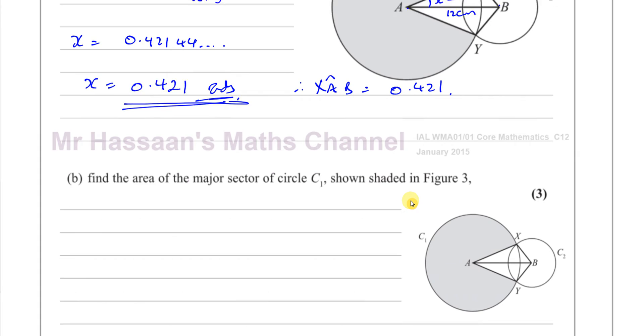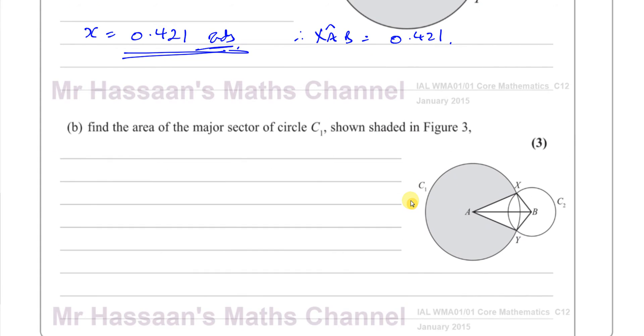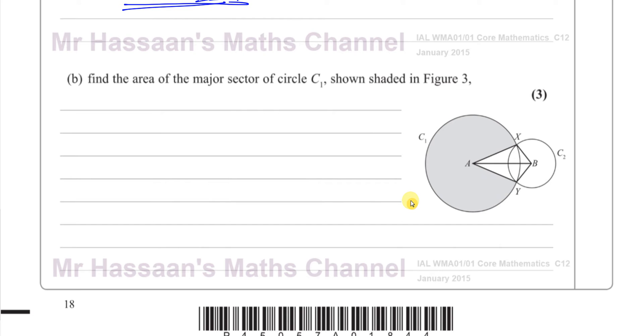Part B asks us to find the area of the major sector of circle C1 shown shaded in figure 3. We know that the area of a sector of a circle when measuring the angle in radians is ½R²θ, where θ is the angle that the sector subtends. Some of you might be wondering, where does this come from?